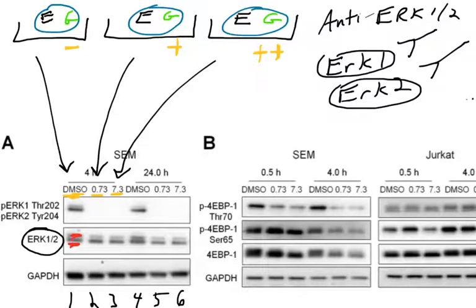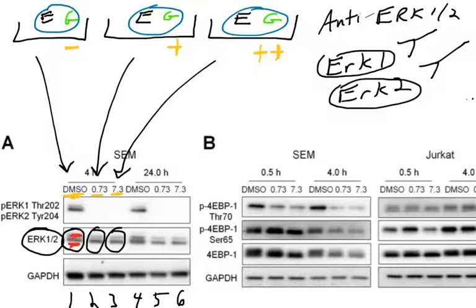It doesn't really matter that there are two of them; what matters is that the proteins are there. Looking at the intensities, comparing lane 1 versus lanes 2 and 3, there's not a significant decrease or increase in ERK1 and 2 levels — maybe a slight decrease, but nothing too significant. So the ERK protein levels don't seem to change in cells treated with this drug for four hours.